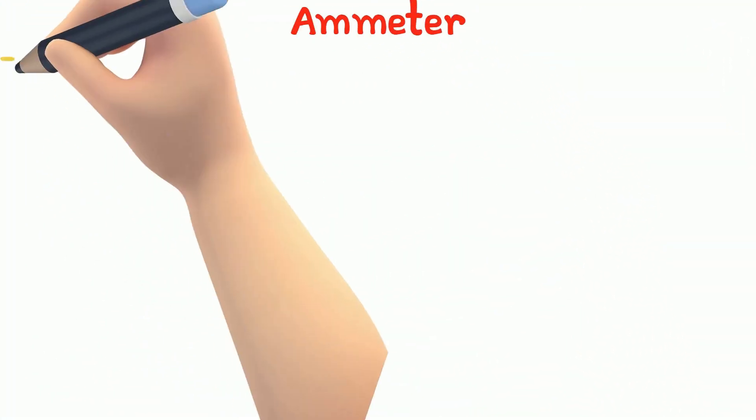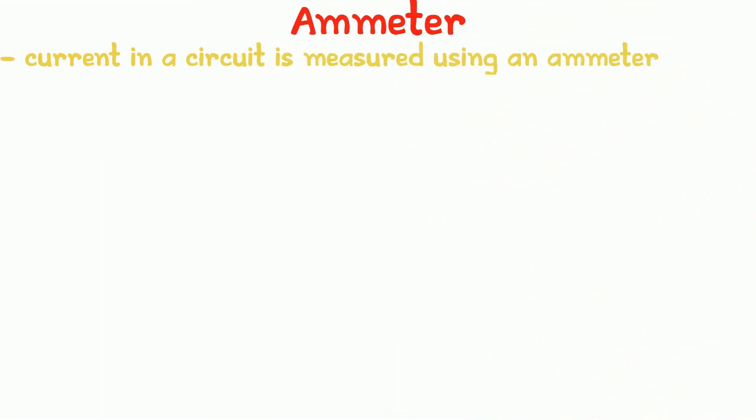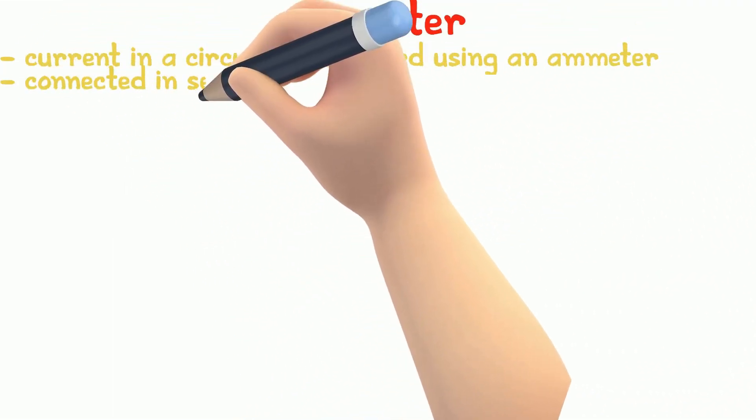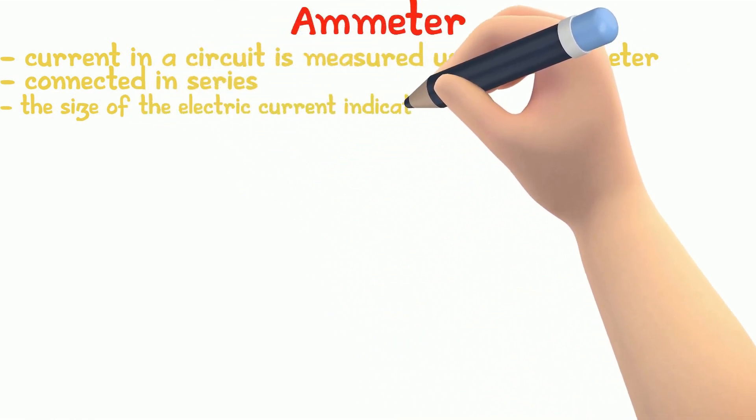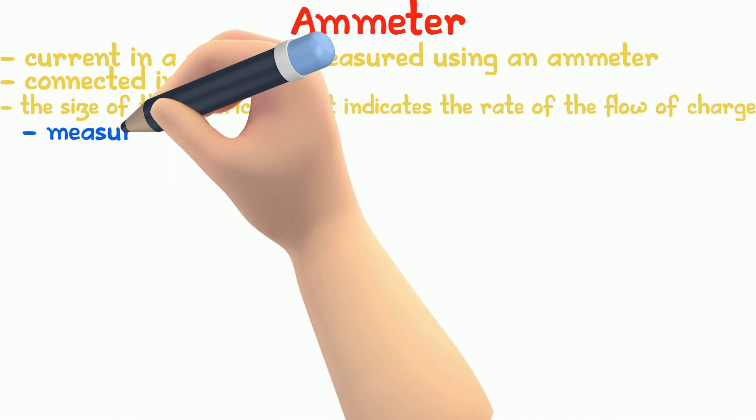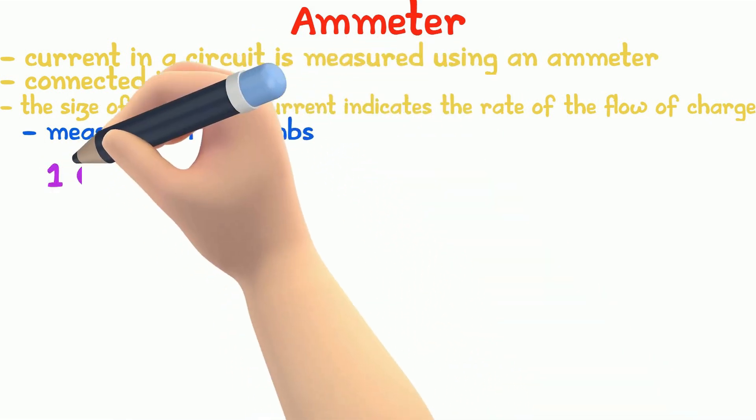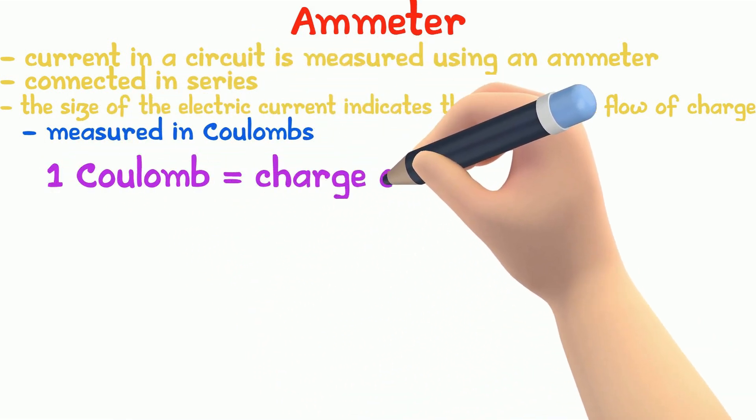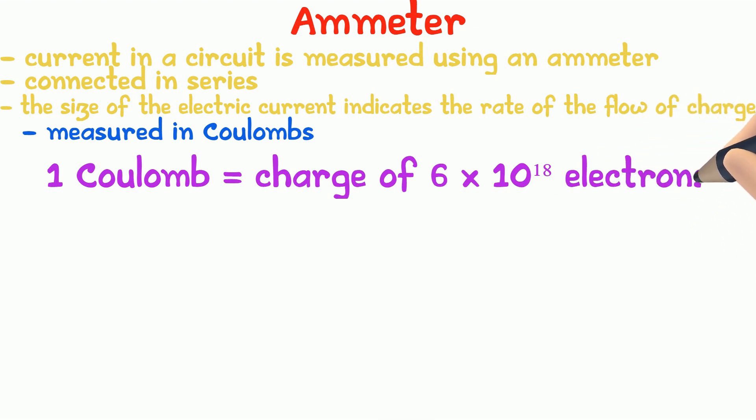Current in a circuit is measured using an ammeter. An ammeter is connected in series in a circuit. Electric current size indicates the rate of the flow of charge. Electric charge is measured in coulombs. 1 coulomb is equal to the charge of 6 into 10 to the power 18 electrons or 6 million million million electrons.